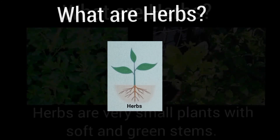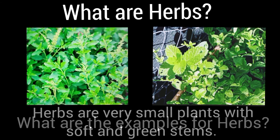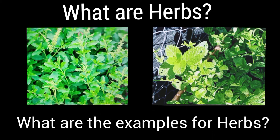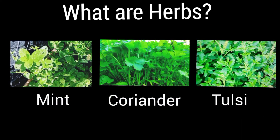What are herbs? Very small plants with soft and green stems are called herbs. Examples of herbs are mint, coriander, and tulsi.